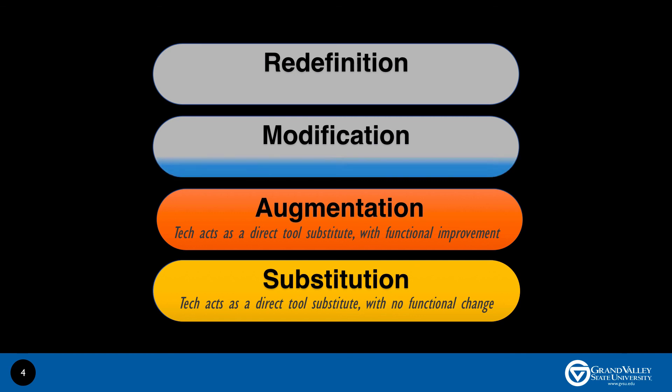At the modification level, technology allows for significant task redesign. An example of this is using the commenting service in Google Docs to collaborate and share feedback on a given task. In this case, technology is necessary for completing the task. There is significant functional change, allowing for peer and teacher feedback and ongoing rewriting. Questions and suggestions increasingly come from students rather than the teacher, thereby making the task more student-centric.